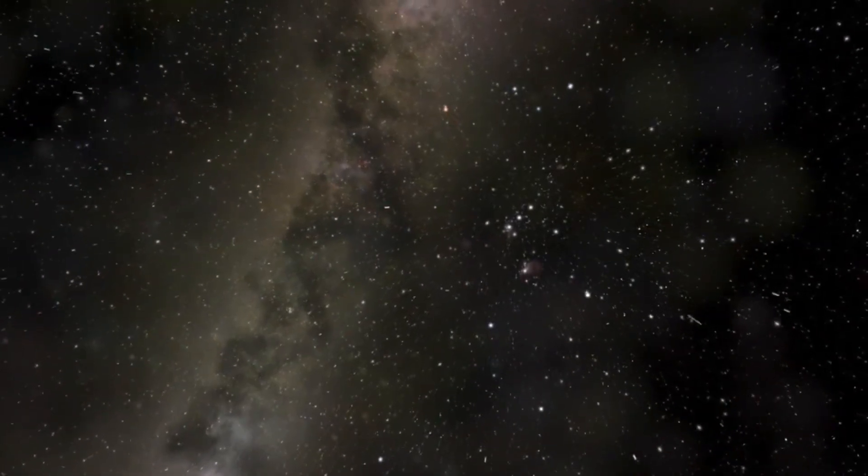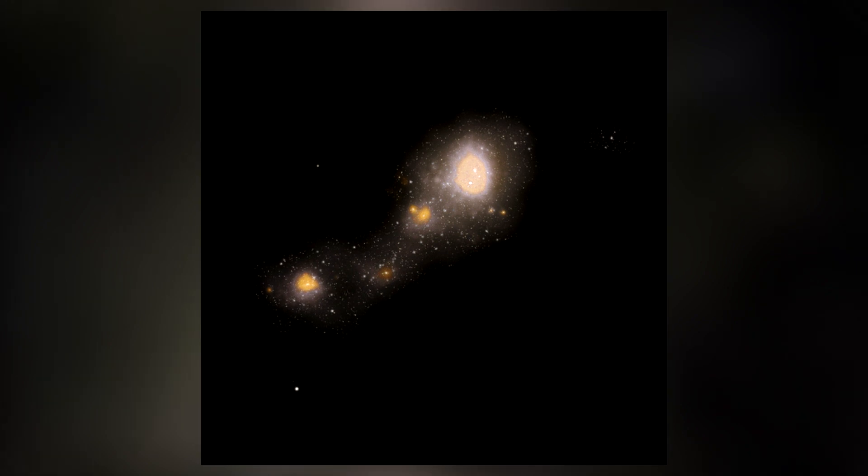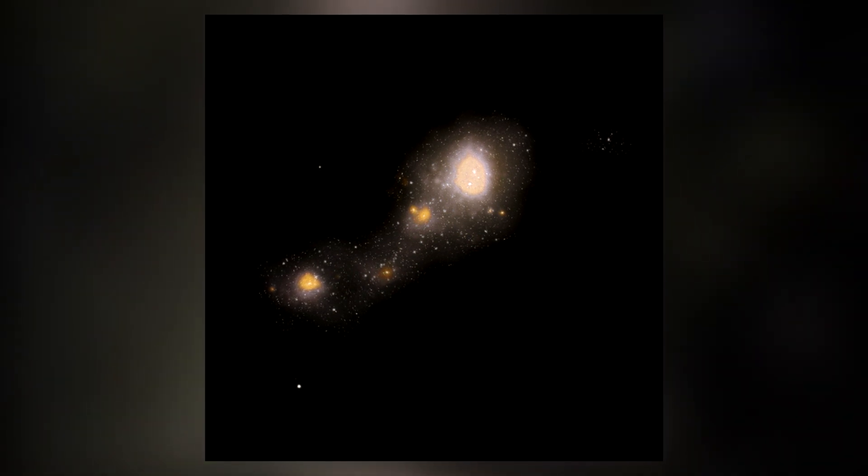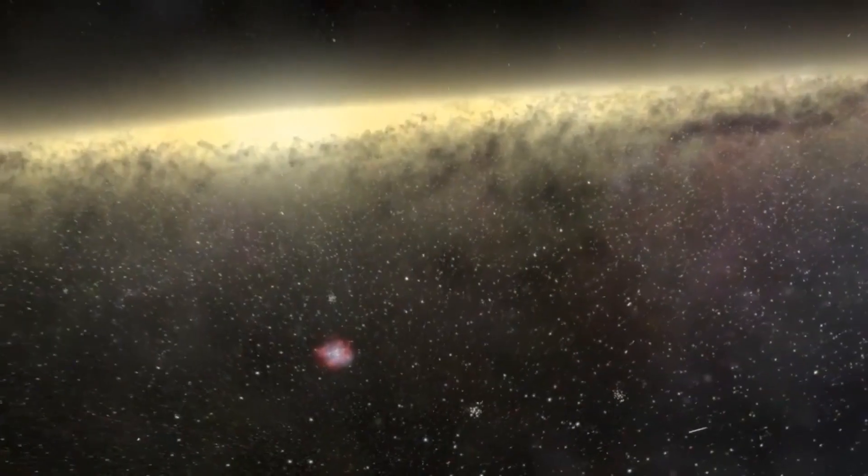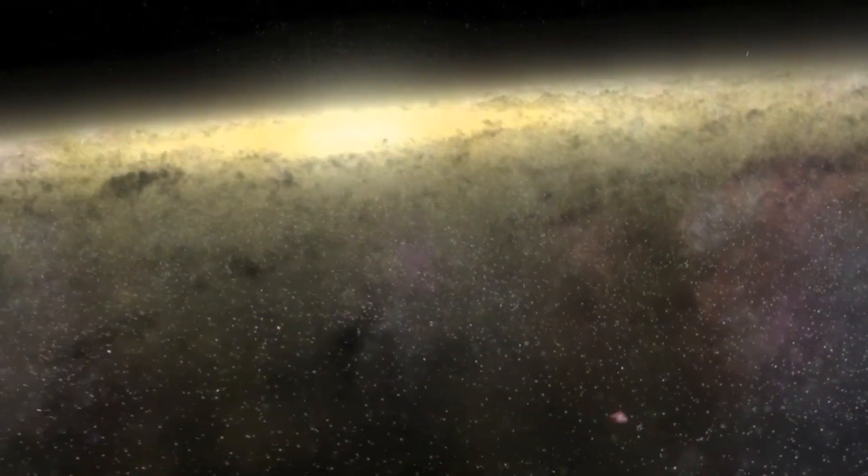Giant cluster. The largest supercluster of galaxies is the Shapley supercluster. Shapley is located in the constellation Centaurus and looks like a bright concentration in the distribution of galaxies. It is the largest array of objects bound together by gravity. Its length is 650 million light-years.